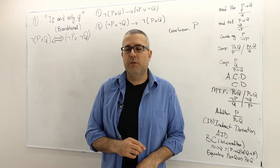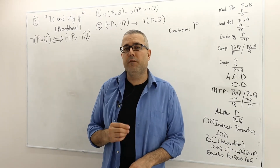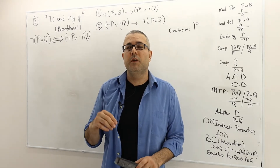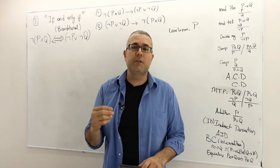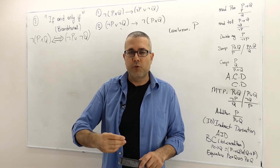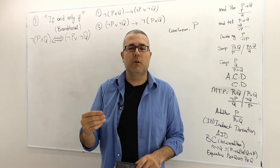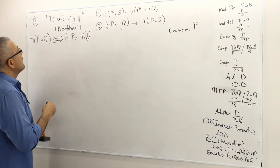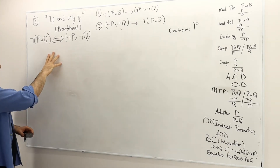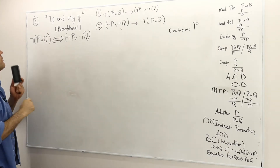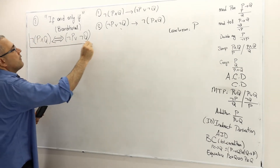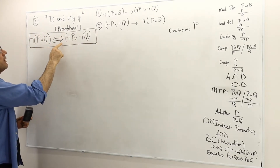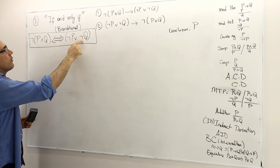Now we are going to prove an if-and-only-if theorem. It's going to be very long and complicated because there's going to be a sub-proof within a sub-proof. Here is the theorem: not P and Q, if and only if, not P or not Q.